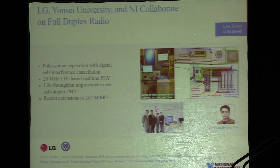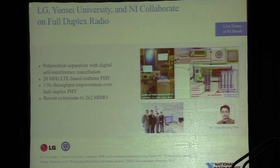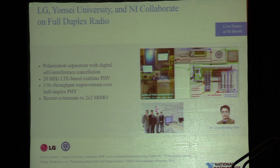I've got two pre-teen daughters, so there's a lot of full-duplex communication that happens at my house. But in a wireless system, it's a little harder — it requires a huge amount of real-time signal processing to pull off. In the demonstration by Yancey, they use an FPGA programmed with LabVIEW to do that real-time signal processing, and they're demonstrating a 1.9x throughput improvement over half-duplex — very close to the theoretical limit using this full-duplex prototype.